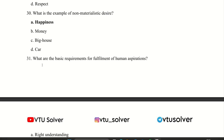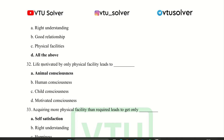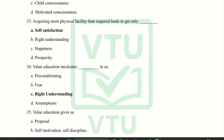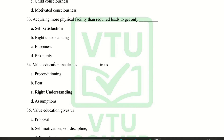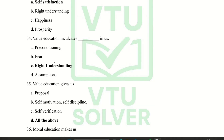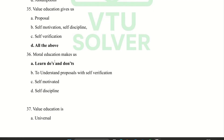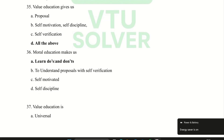What are the basic requirements for fulfillment of human aspiration? All of the above. Life motivated by only physical facility leads to animal consequences. Acquiring more physical facility than required leads to only self-satisfaction. Value education includes right understanding. Value education gives us all of the above. Moral education makes us learn what to do and what not to do.